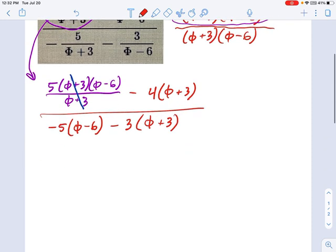now it's just a job of collecting some like terms together. So on the top, let's go through this and split up those parentheses. I have 5 phi minus 30, and minus 4 phi minus 12.